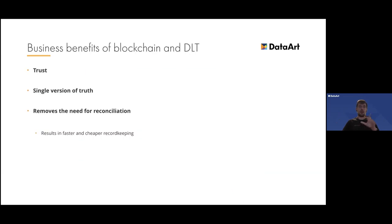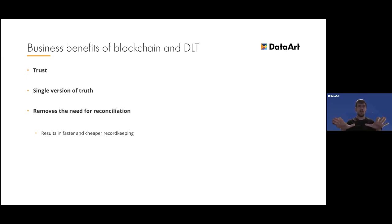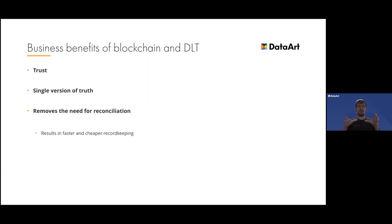Chaincode is the name for smart contracts in Hyperledger Fabric — a simple application with a strict programming interface and specific way to work with blockchain's internal data, but otherwise just a real Go or Java application where you can use any dependencies, even private ones. This drastically eases onboarding development teams. The main business benefits of blockchain and distributed ledgers are: trust (all changes are historic, observable, and cryptographically assured), a single version of truth for all participants, and the elimination of reconciliation and third-party intermediaries, making record keeping fast and cheap across multiple parties.